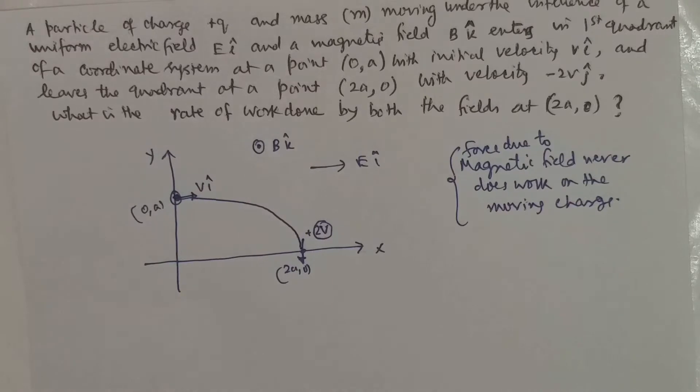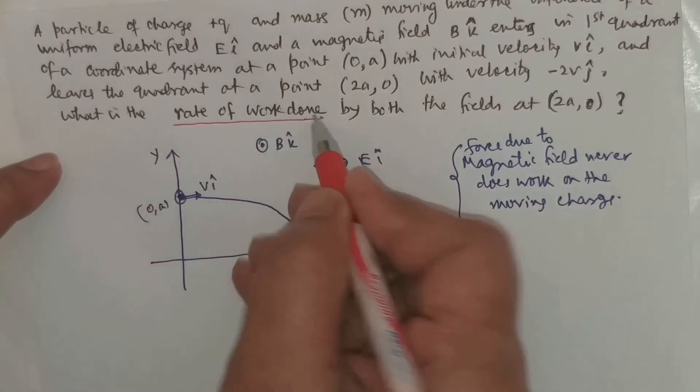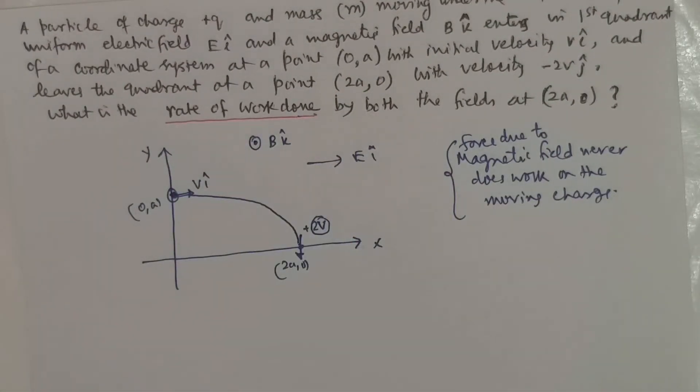Whatever work is to be done is only by the electrostatic field. But just look at the question, they are asking the rate of doing work. Rate of doing work means the power. Therefore, the power will be, here just see, the magnetic force, forget about the work done.